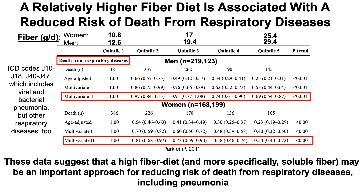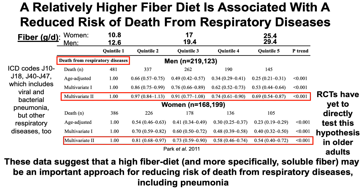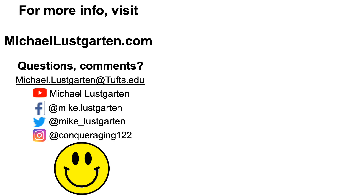Based on all the data shown, this suggests that a high-fiber diet, and more specifically soluble fiber, may be an important approach for reducing risk of death from respiratory diseases, including pneumonia. It's also important to note that there are no RCTs — randomized controlled trials — that have directly tested this hypothesis in older adults. The data is yet to be seen if this will actually be proven in studies of older adults that have pneumonia. Thanks for watching and have a great day.